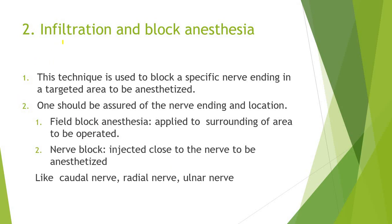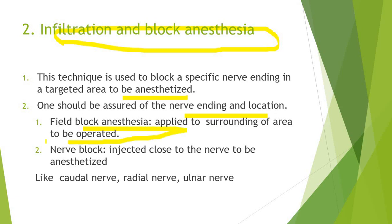Infiltration or field block anesthesia is used to block the specific nerve endings of a targeted area to be anesthetized. One should be assured of the nerve endings and their location. If you are not sure, the drug may enter systemic circulation and cause problems such as arrhythmia, worsening the patient's clinical condition. In nerve block anesthesia, the drug is injected closer to the nerve to be anesthetized.